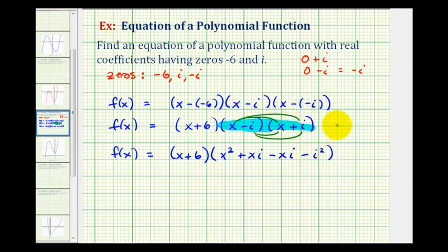Remember, i squared is equal to negative one, so let's go ahead and simplify this again. f(x) equals the quantity x plus six times the quantity x squared. xi minus xi, that would be zero. Then we'll have minus i squared, but this is the same as minus negative one, which becomes plus one.